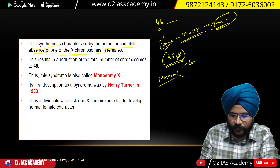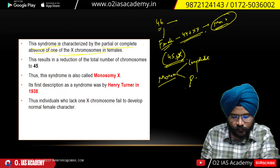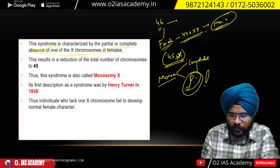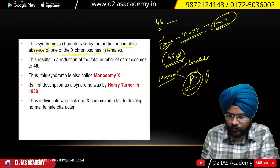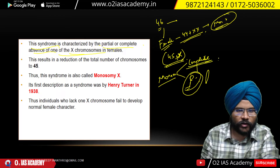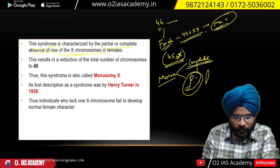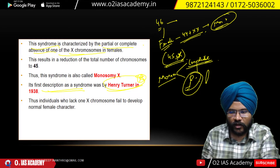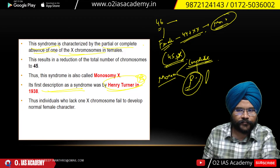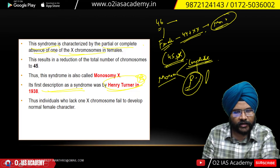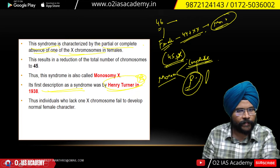In partial monosomy, one arm of the X chromosome remains while the other is cut off. In complete monosomy, the entire X chromosome is absent. The first description of this condition was given by Henry Turner, after which it was established as Turner syndrome. The karyotype for complete monosomy is written as XO — meaning only one X with nothing alongside it, indicating the monosomy condition.